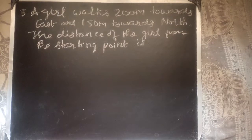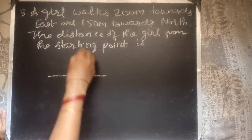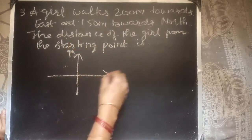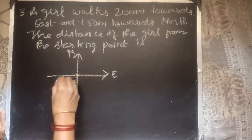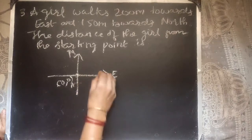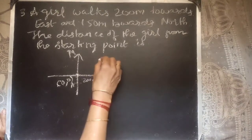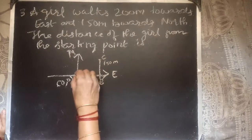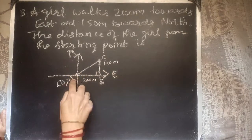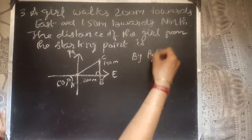A girl walks 200 meters towards east and 150 meters towards north. The distance of the girl from the starting point is — we draw the X axis as east and Y axis as north, with the starting point as the origin A. She walks 200 meters east to point B, then 150 meters north to point C. Since the axes are perpendicular, we can apply Pythagoras theorem to find AC.